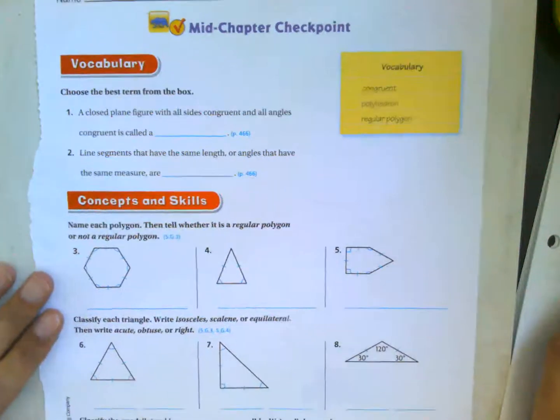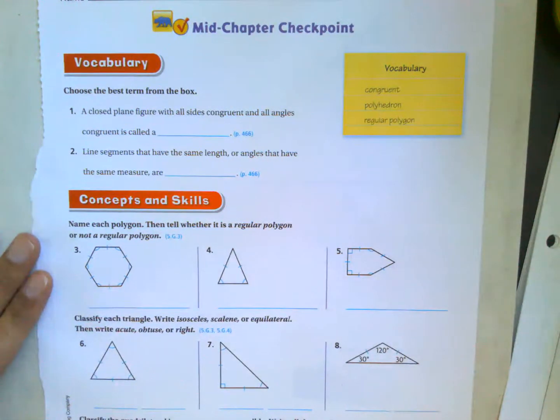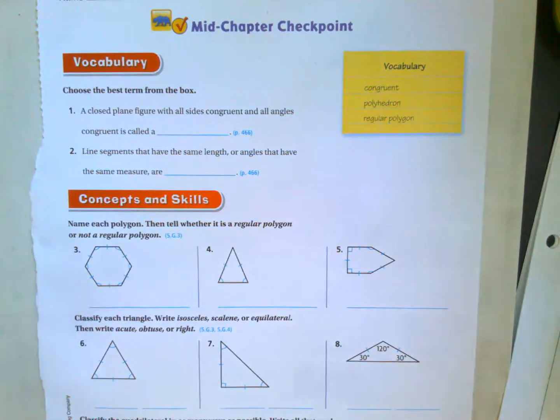All right, so today we're going to work on the mid-chapter 11 checkpoint. Please tear out page 481 and 482, which you've already had. You are going to need your math notes to identify the shapes, so the notes we've taken this week are primarily the notes that you're going to need, and any of the charts that we went over.